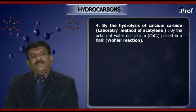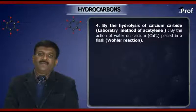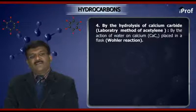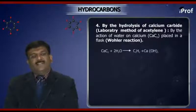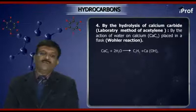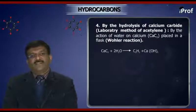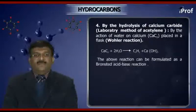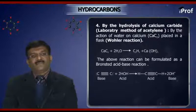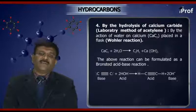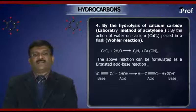Next, by the hydrolysis of calcium carbide — this is a laboratory method for preparing acetylene. By the action of water on calcium carbide (CaC2), it gives the corresponding alkyne. The reaction is: CaC2 + 2H2O → C2H2 + Ca(OH)2. C2H2 is acetylene. This reaction can be formulated as a Brønsted acid-base reaction, where the triple bond acts as the base and water acts as the acid, giving HC≡CH plus 2OH⁻.